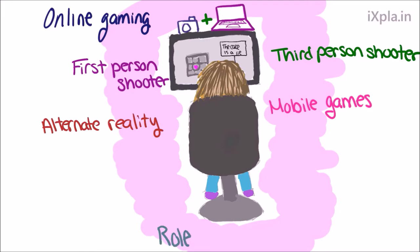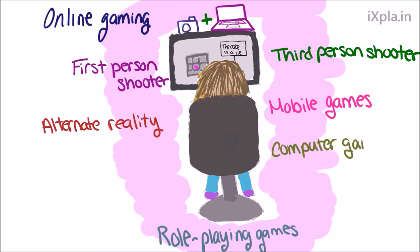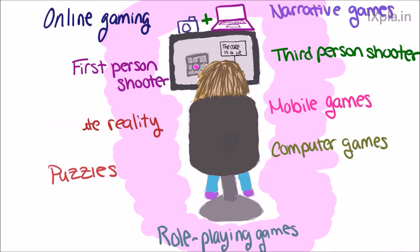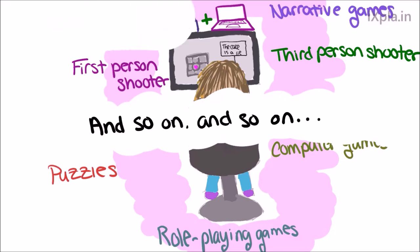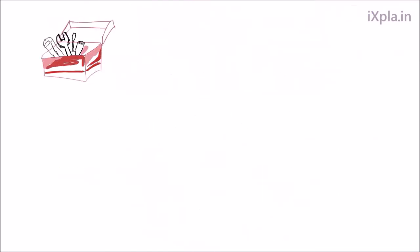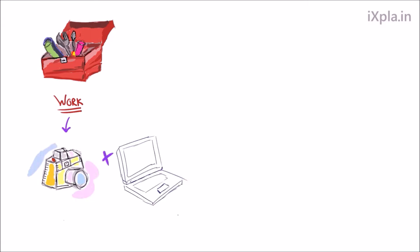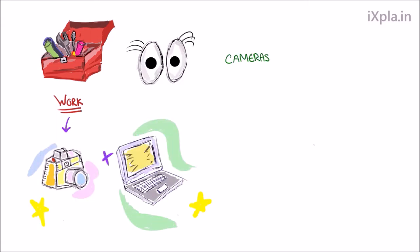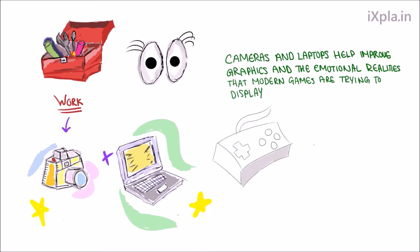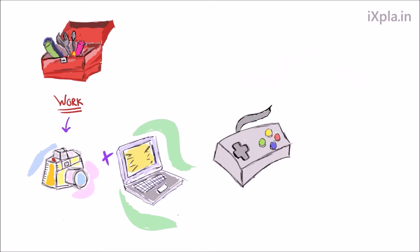There are also mobile games, alternative reality role-playing games, computer games, narrative games, puzzles, and so on. With all these types of games being created, a lot of work needs to be put into this, and with all that work comes the help of cameras and laptops. They help improve the visuals of the games and make it more real. Cameras and laptops help improve graphics and emotional realities that modern games are trying to display.